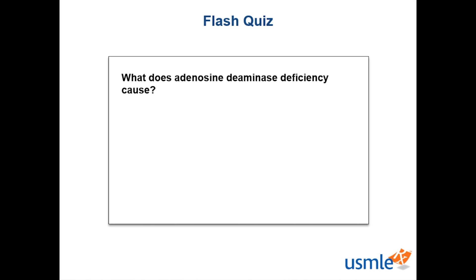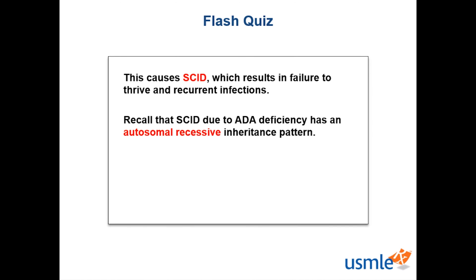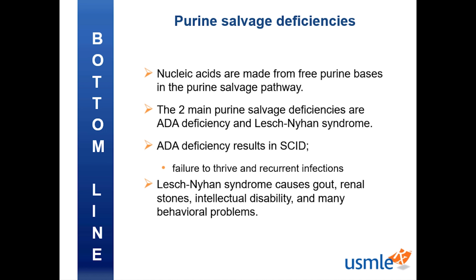Let's move on to a quick flash quiz. What does adenosine deaminase deficiency cause? This causes SCID, which results in failure to thrive and recurrent infections. Recall that SCID due to ADA deficiency has an autosomal recessive inheritance pattern. The bottom line: nucleotide acids are made from freed purine bases in the purine salvage pathway. The two main purine salvage deficiencies are ADA deficiency and Lesch-Nyhan syndrome. ADA deficiency results in SCID, failure to thrive, and recurrent infections. Lesch-Nyhan syndrome causes gout, renal stones, intellectual disability, and many behavioral problems. That's all for purine salvage deficiencies. Thanks for watching!